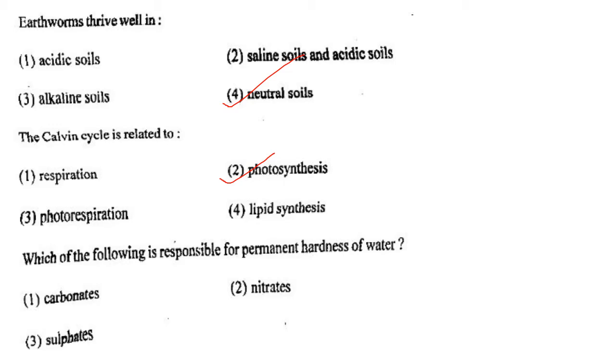Next one: Earthworms thrive well in option 1, acidic soil; option 2, saline and acidic soils; option 3, alkaline soil; option 4, neutral soil. Answer is option 4: neutral soil.